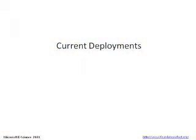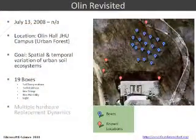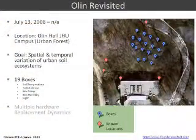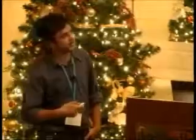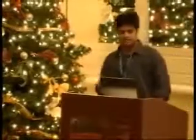Now I'll talk about our current set of deployments. After learning all of that, we started deploying the next generation of sensors and went back to our favorite location — Olin Hall at Johns Hopkins campus. There are 19 boxes deployed there. From the soil ecology point of view, they were interested in studying the spatial variation aspects of ecosystems. For the computer scientists, this deployment allowed us to test for multiple hardware replacements. In the beginning phases, there were a lot of failures — our code broke, so we had to replace a lot of boxes, stress-testing our schema.